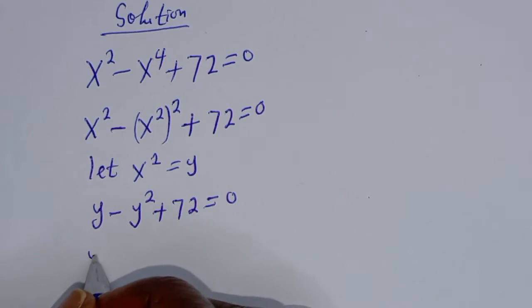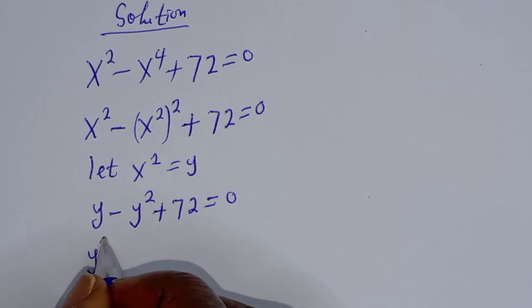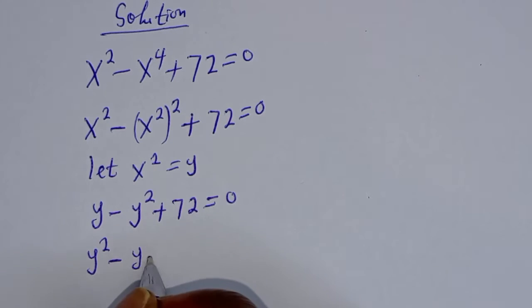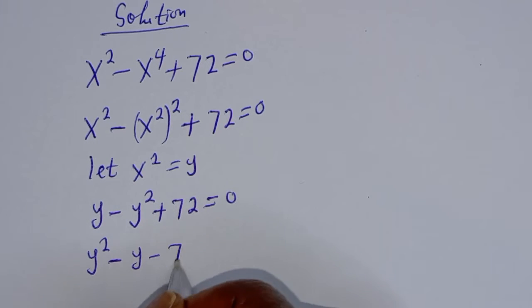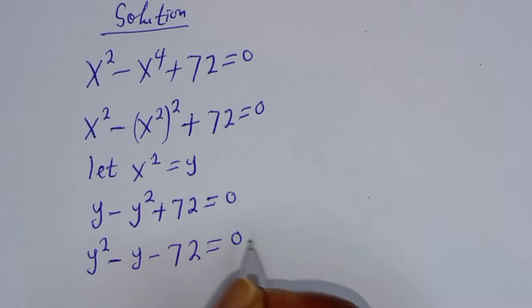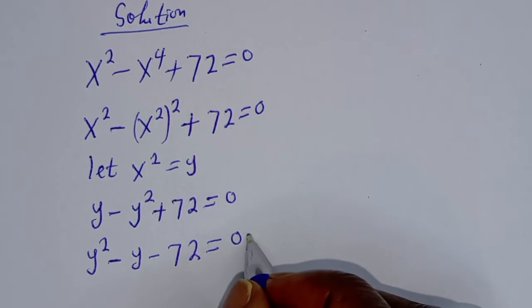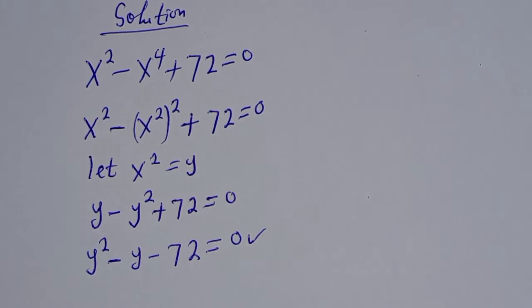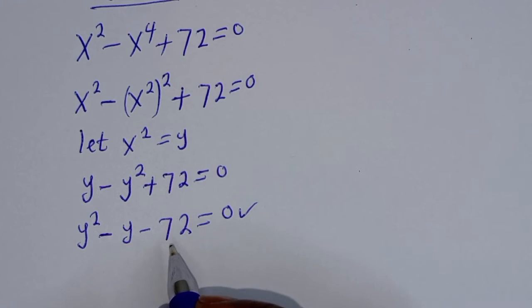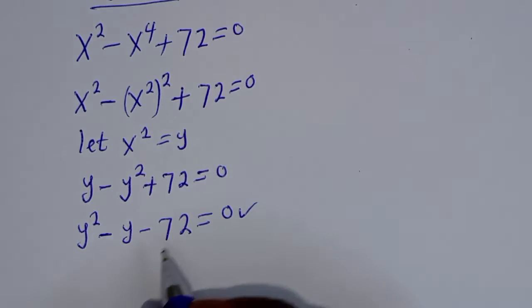Let's rearrange: y squared minus y minus 72 is equal to 0. This is a quadratic equation. Let's solve this using the factorization method.